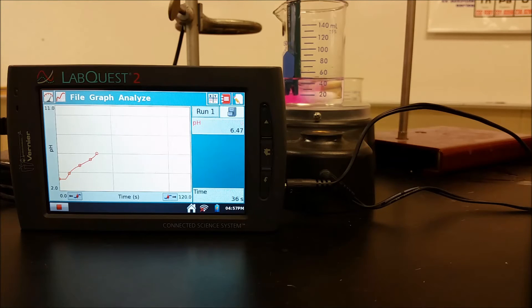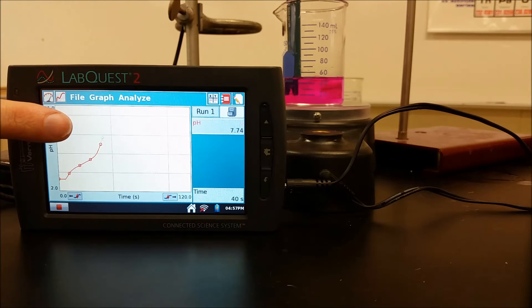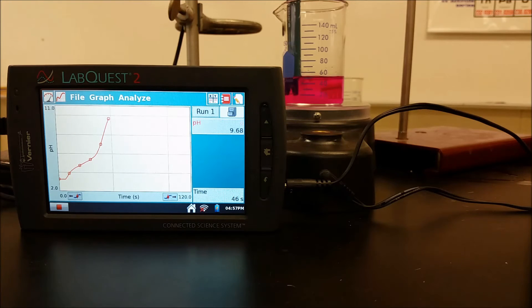So we're now starting to see some flashes of pink, but it's not gone completely pink until right now. And now if you look over to the pH curve, we're right where the equivalence point is, and so therefore our equivalence point and our endpoint are nearly identical, and that's optimal to getting a good result.